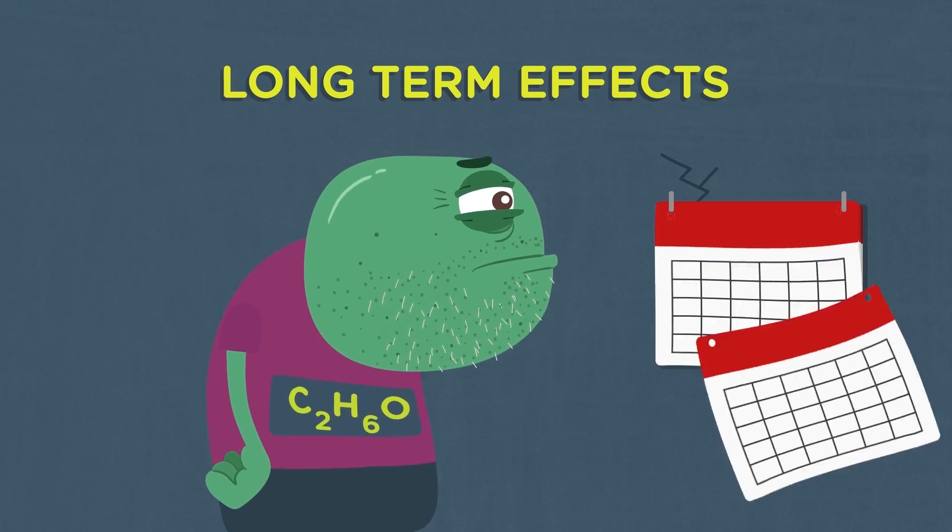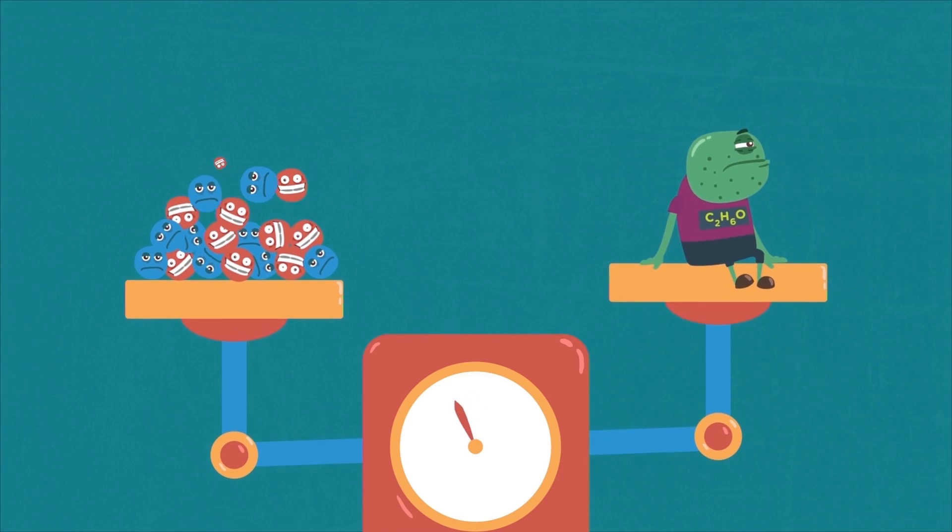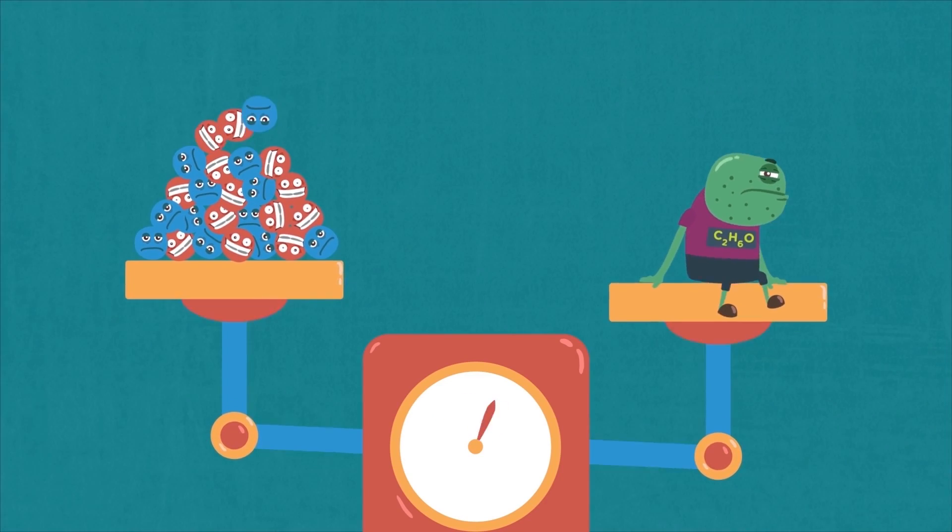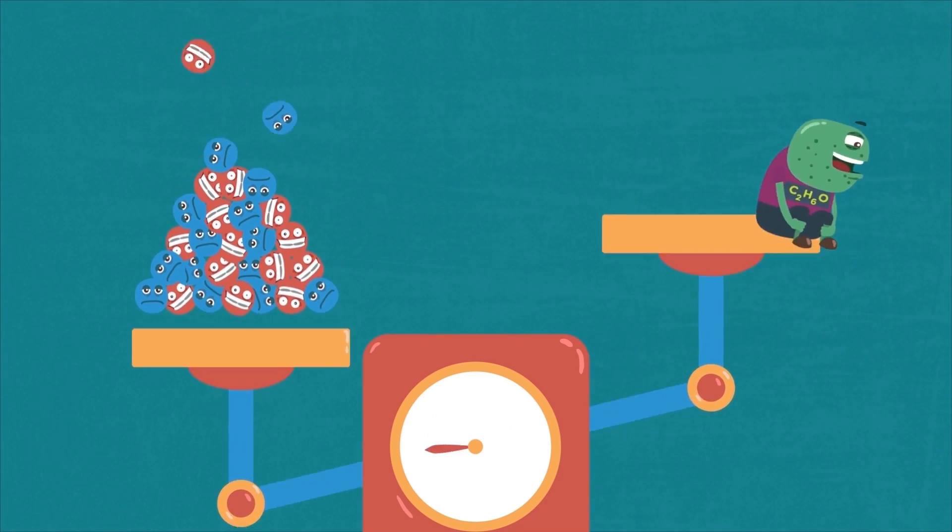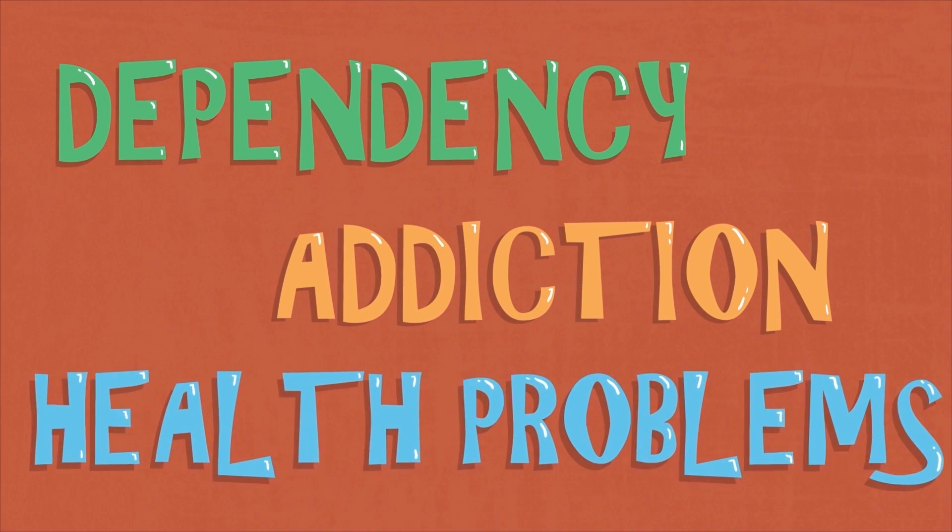But if a person continues drinking too much, it can have serious long-term effects. The brain will begin to chemically compensate for the way alcohol affects it, and in time will start to rely on alcohol to function normally. This can lead to dependency, addiction, and other serious health problems.